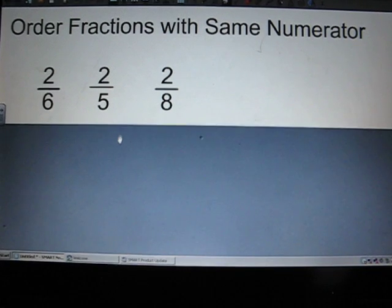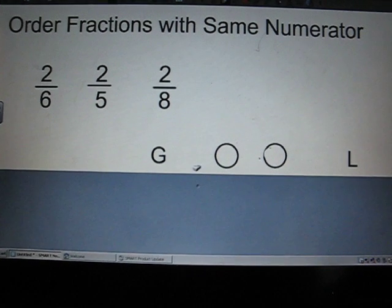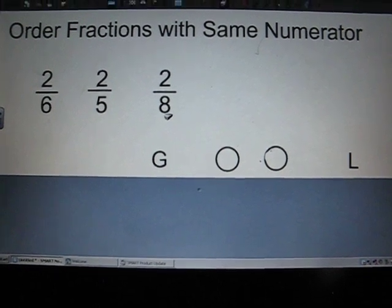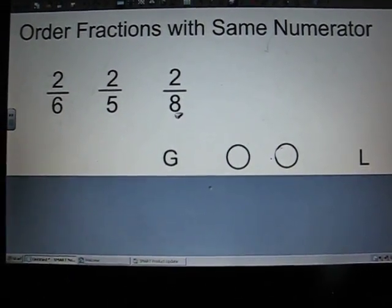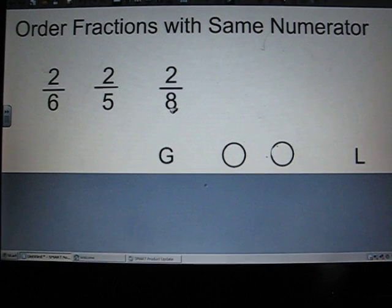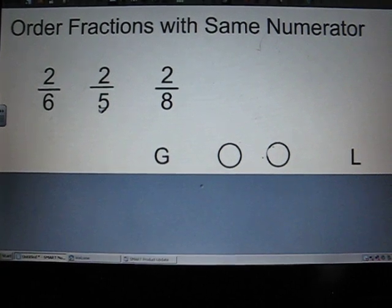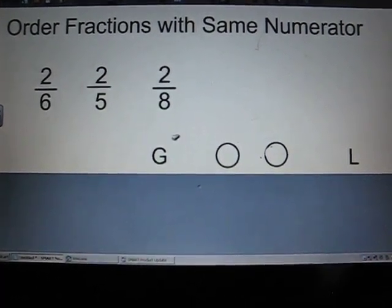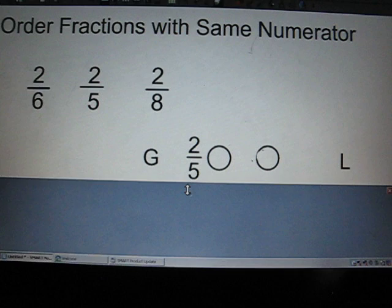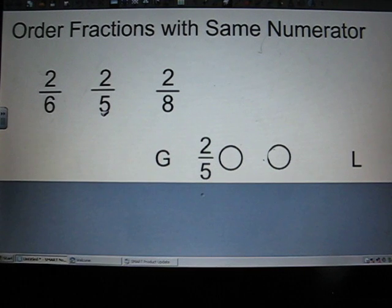So, thinking about that, we're first going to go from order from greatest to least. We're trying to find that the fraction has the greatest amount shaded in. Well, in order to find the greatest amount shaded in, I need to find the one that has the greatest size pieces. Well, we remember eights is big, so that means it has small pieces. Fives is small, so that means it has bigger pieces. And six is in the middle. So, that means that two-fifths is going to be my greatest fraction. Because it has a small denominator means it has bigger pieces.